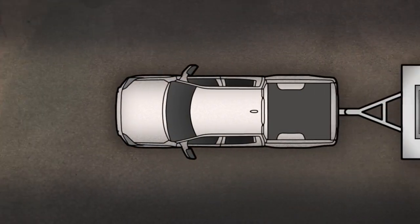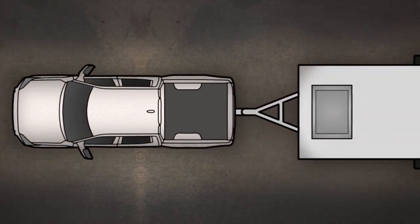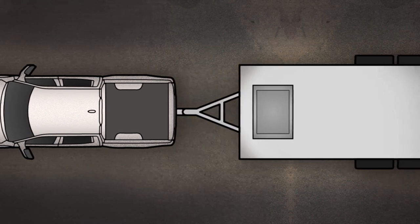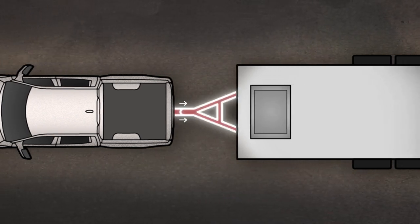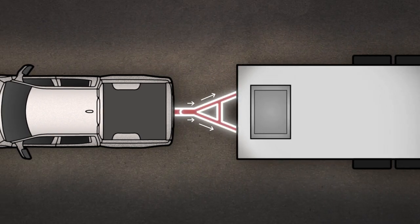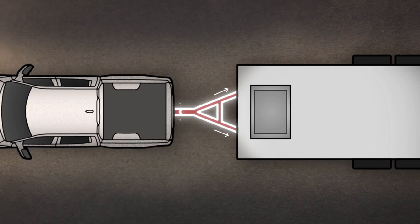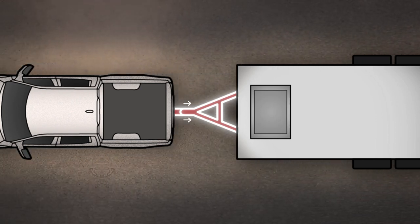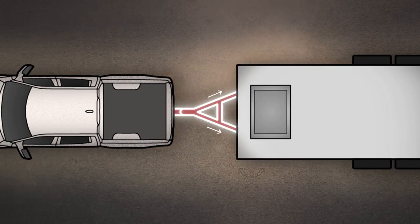A weight distribution hitch can be a driver's best friend when towing heavier loads. That's because it helps distribute weight more evenly between the vehicle that's towing and the trailer axle, which helps improve stability and handling while towing. Toyota recommends using a weight distribution hitch for trailers over 5,000 pounds.